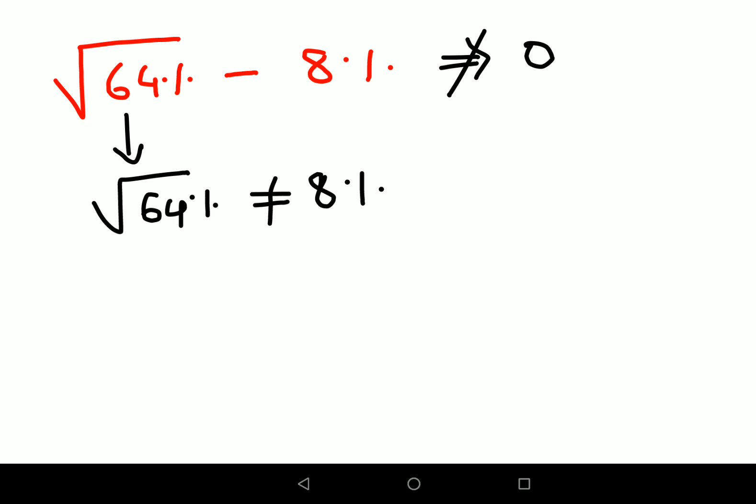That is why the answer cannot be 0. Now let's quickly understand what will be square root of 64%. Please understand whenever you have a percent sign after any number, see what is the word percent.